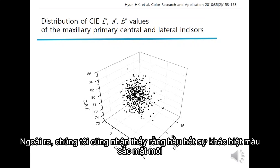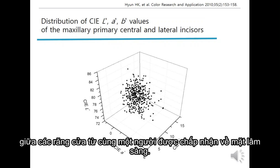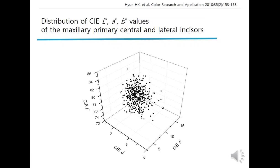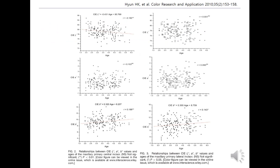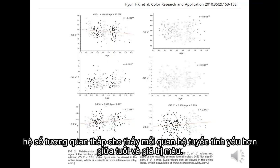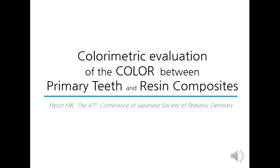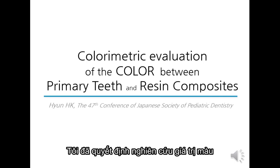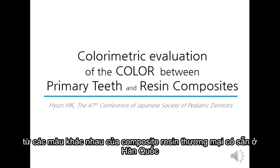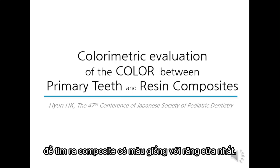We found that most color differences among incisors from the same person were clinically acceptable. The low correlation coefficients show a weaker linear relationship between age and colorimetric value. I decided to investigate the colorimetric values of various shades of commercial resin composites available in Korea in order to find the best color-matching composites for primary teeth.